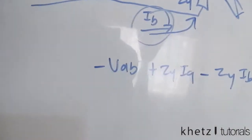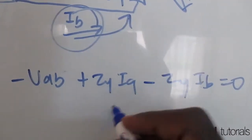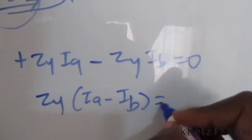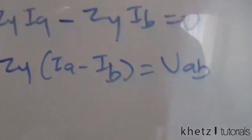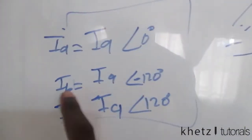Now let's group the terms and see what we can do from there. Grouping the terms, we're actually going to have Zy(IA - IB) equals VAB on that other side of the equation.